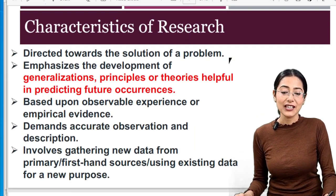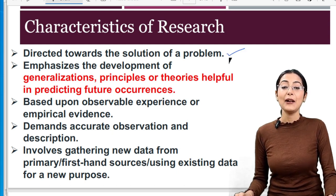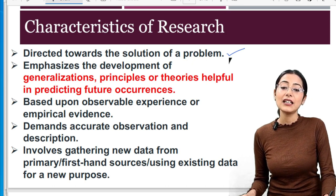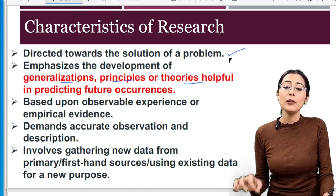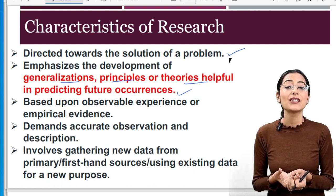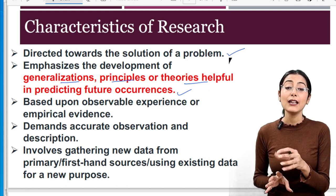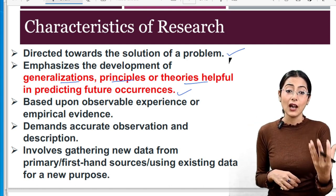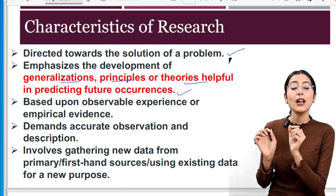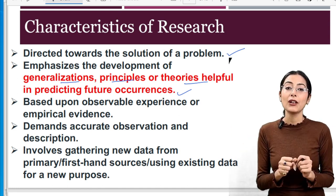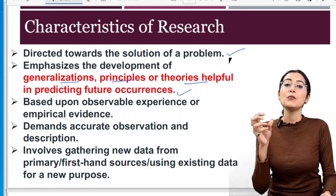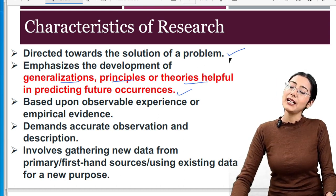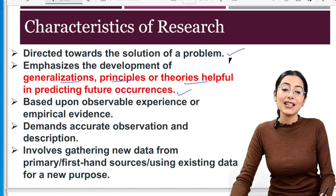Let's see the characteristics of research. Research is directed towards solution of a problem. The other point emphasizes the development of generalizations, principles, and theories helpful in predicting future occurrences. If you find a solution for any problem, you record it, and it becomes a theory or a principle. We know in English literature and Paper 1 many theories — researchers found them, proved them, and established them.